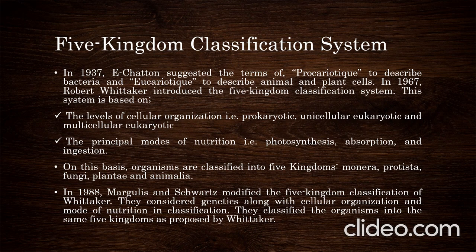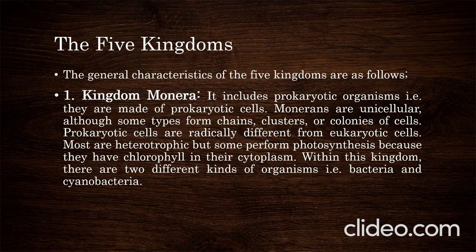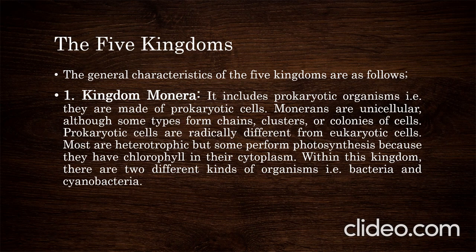The five kingdoms: Kingdom Monera includes prokaryotic organisms — they are made of prokaryotic cells. Monorans are unicellular, although some types form chains, clusters, and colonies of cells. Prokaryotic cells are radically different from eukaryotic cells. Most are heterotrophic, but some perform photosynthesis because they have chlorophyll in their cytoplasm. Within this kingdom there are two different kinds of organisms: bacteria and cyanobacteria.